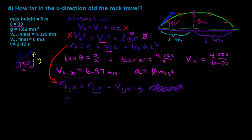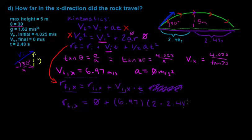We plug in our values: the final x-direction distance equals 0 plus 6.97 meters per second times (2.48 plus 2.48), or just 2 times 2.48 seconds. Calculating this, our final x-direction distance that the rock traveled is equal to 34.58 meters.